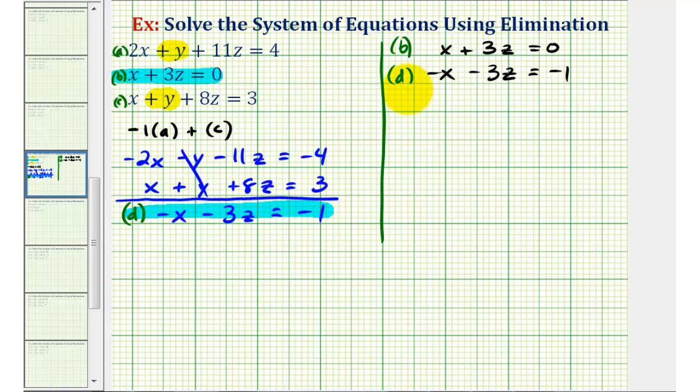But notice when we do this, both the X terms and the Z terms are opposites. Therefore, the left side would just be zero and on the right side, we have zero plus negative one which is equal to negative one. So whenever all the variables simplify out and we're left with an equation like this,